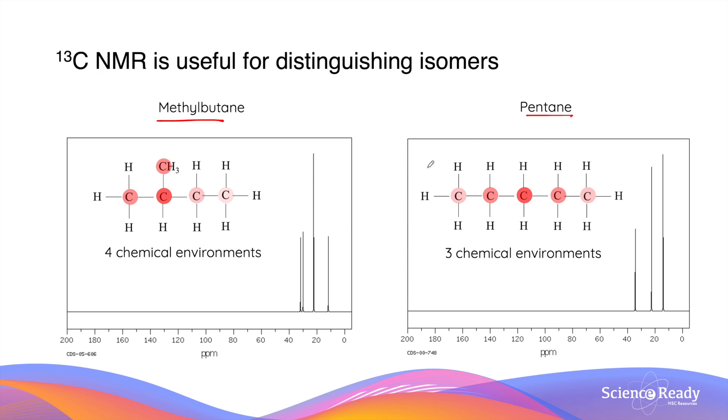However, in carbon-13 NMR spectroscopy, pentane, like we saw before, produces three signals due to the fact that there are three chemical environments. In contrast, in methylbutane, there are four chemical environments as shown. This produces four signals.